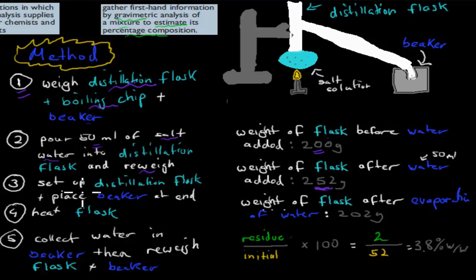The third step is to set up the distillation flask and place the beaker at the end. And then the fourth step is to heat the flask. And this is what I mean by this. So we have, for example, this setup. We have our Bunsen burner here. This is going to flame, heat the actual distillation flask. We've got the distillation flask. And inside, we've got our salt solution.